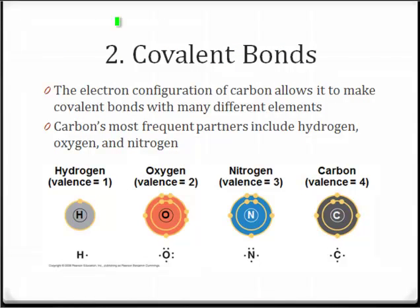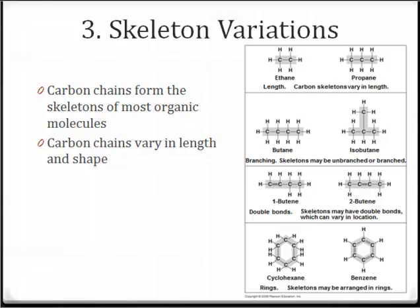The second important property is that carbon forms covalent bonds. It can form covalent bonds with many different elements, but most frequently it forms bonds with hydrogen having a valence of 1, oxygen with a valence of 2, and nitrogen with a valence of 3. The third important property of carbon is that it can form a variety of skeleton shapes. These carbon chains form the backbone of most organic molecules.